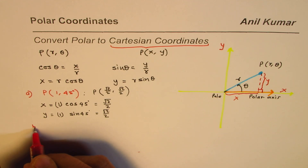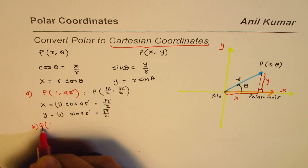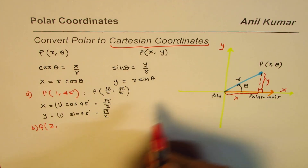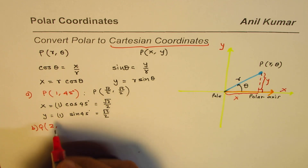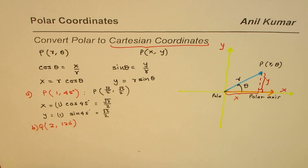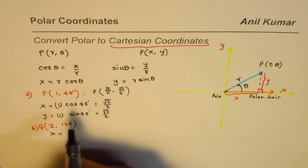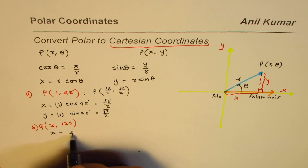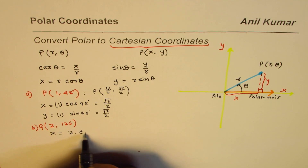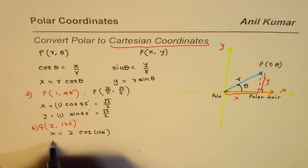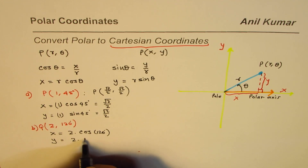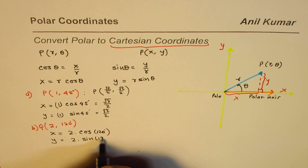Now if I take another point B, let's say point Q is (2, 120°). Using the same formula, the x coordinate will be 2 times cos of 120°, and the y coordinate will be 2 times sine of 120°.